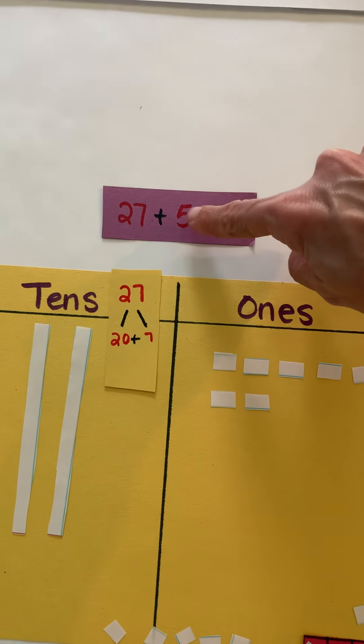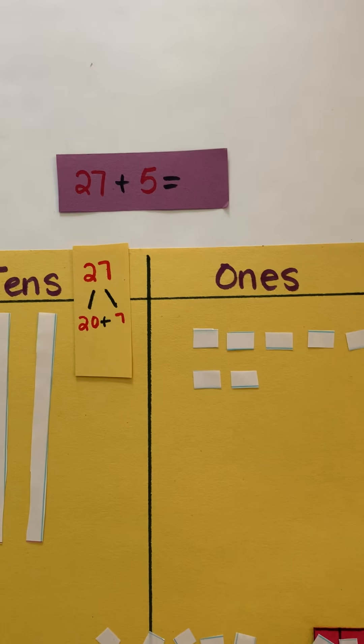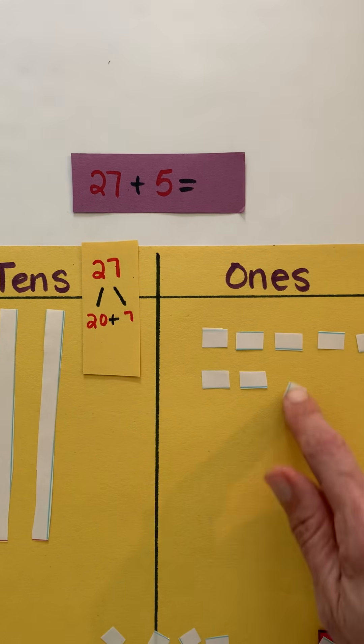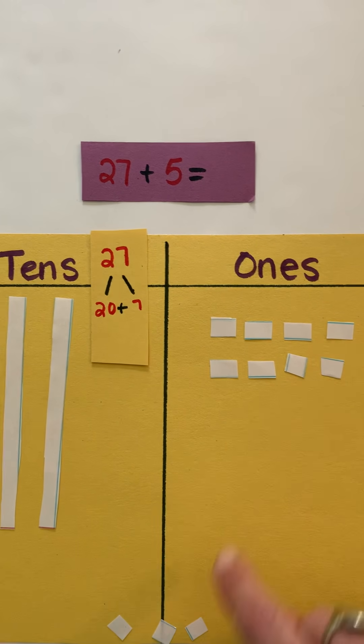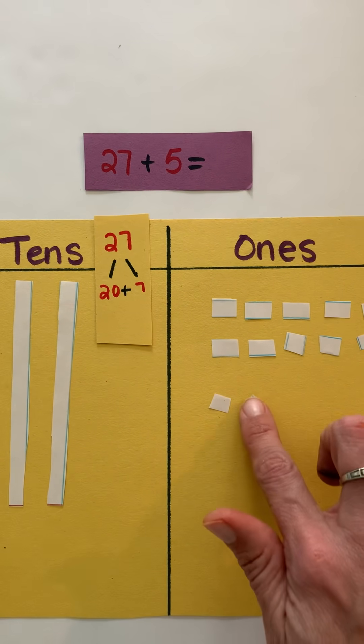Now I want to add, and when we add we combine or join, so I'm going to add five ones. So I add one, two, three, and you can see I made a group of 10, four, five.